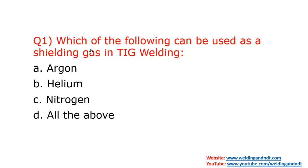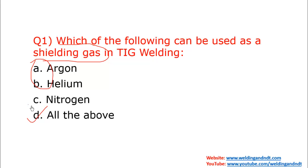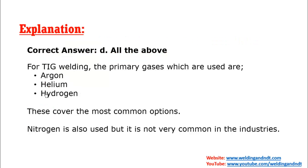Our first question is: which of the following can be used as a shielding gas in TIG welding? The most common shielding gases are argon and helium, but apart from these, some active gases are also used, like hydrogen and nitrogen. So the answer will be all of the above. While the most common gases are argon and helium, nitrogen is also used in small amounts.